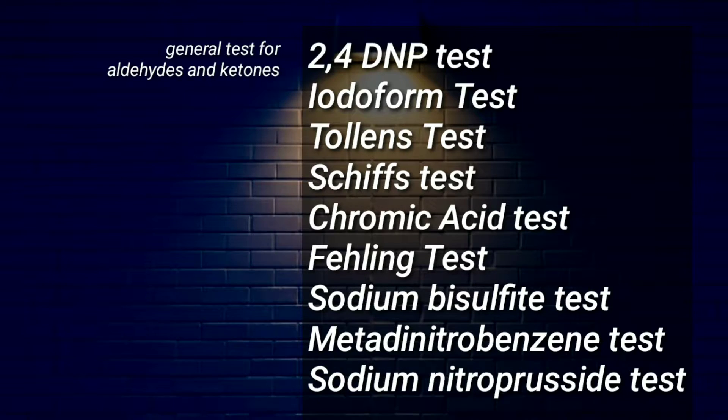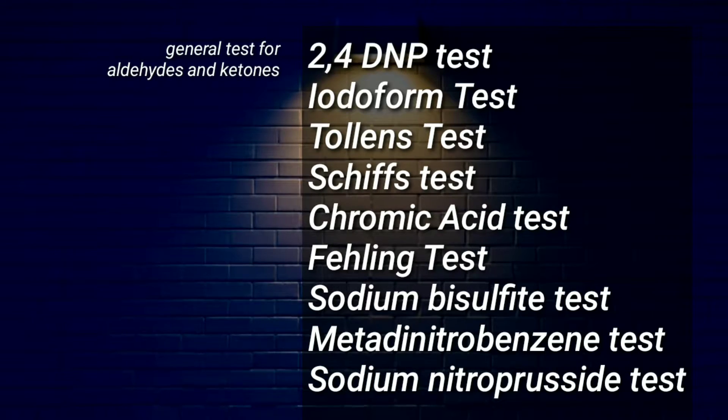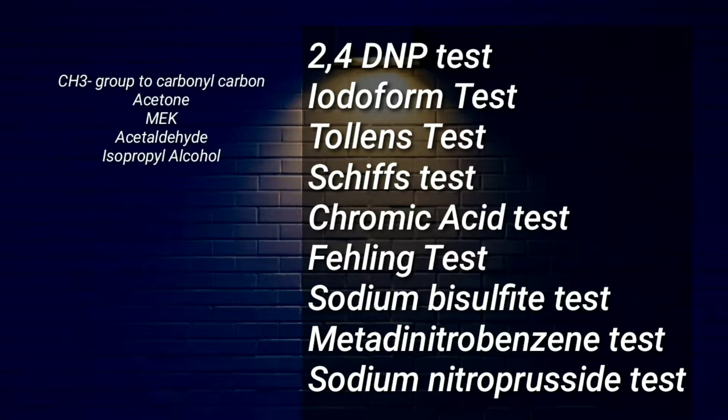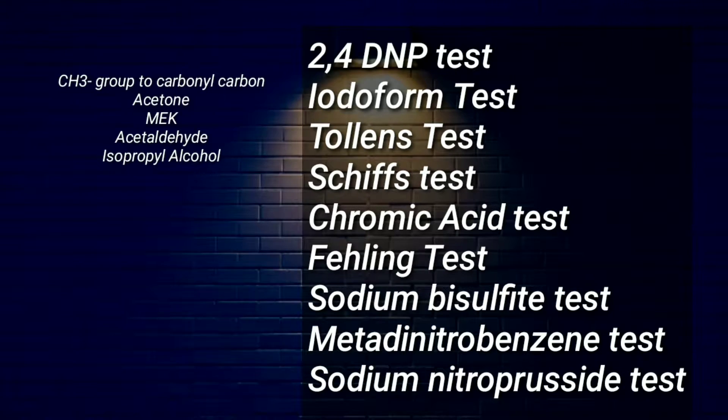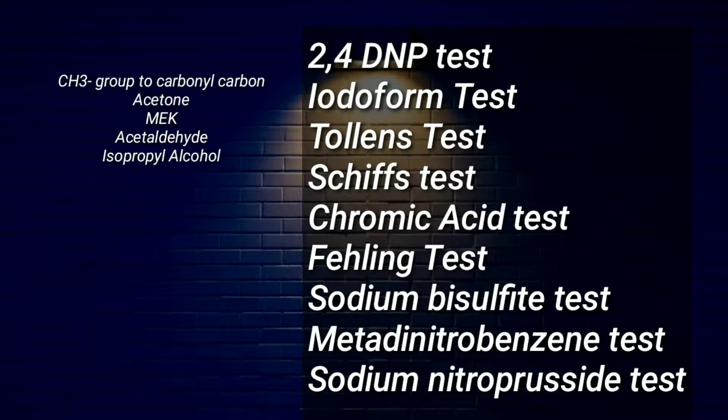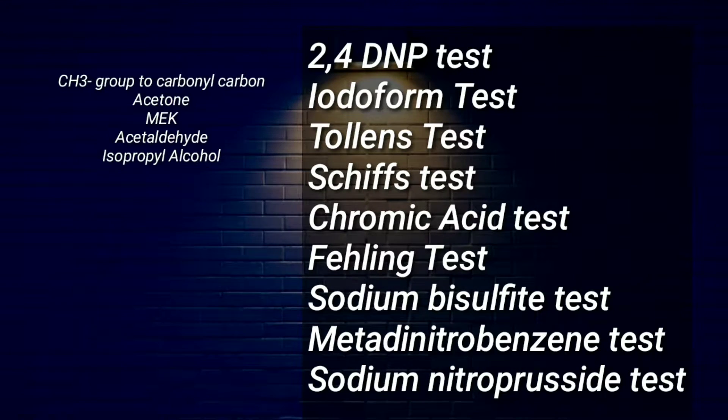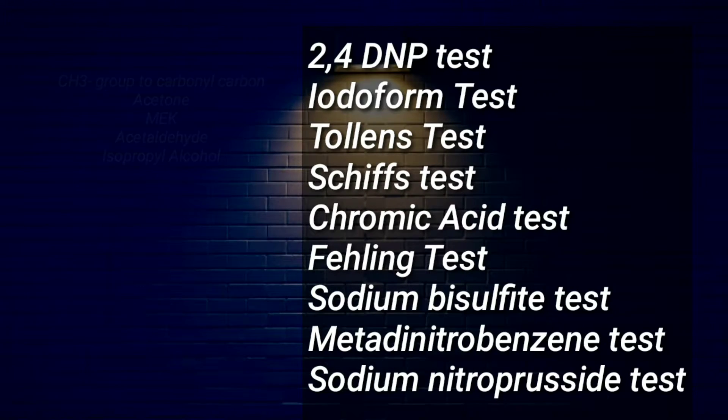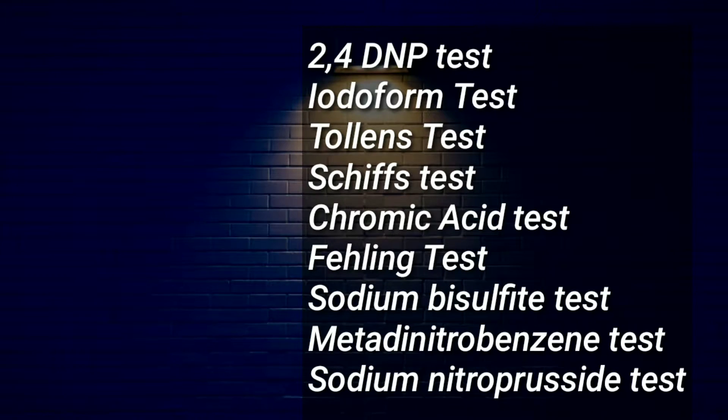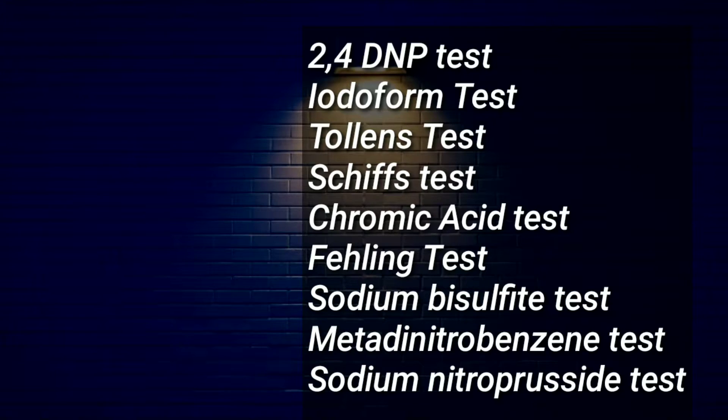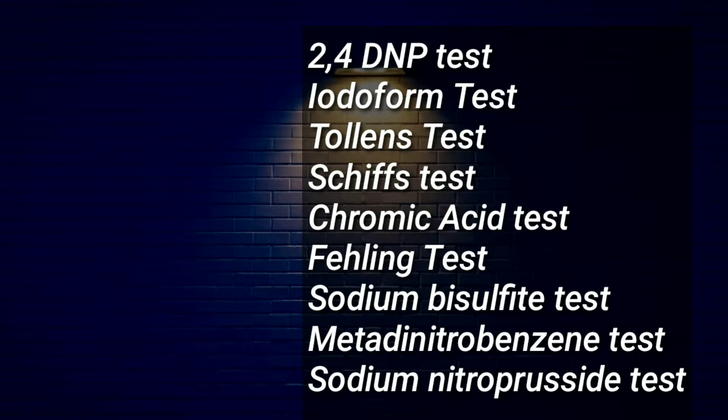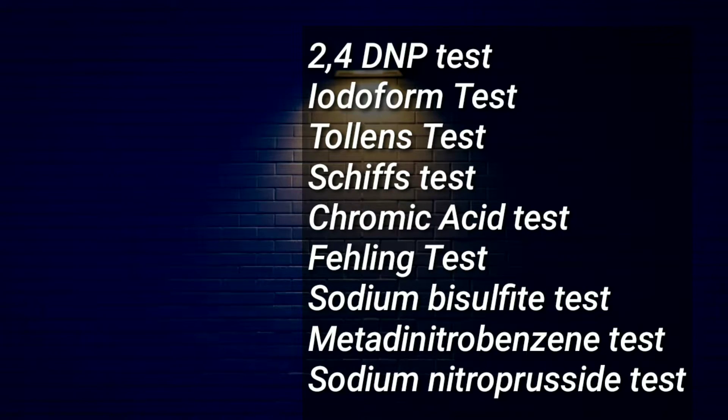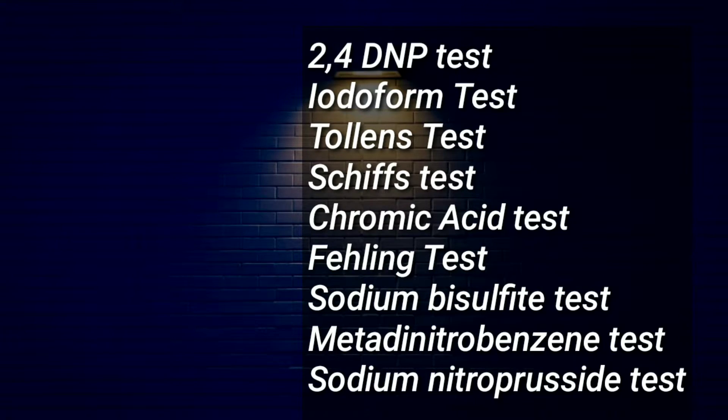The various tests for aldehydes and ketones are: the 2,4-dinitrophenylhydrazine test, which is a general test for aldehydes and ketones. Iodoform test is not specific to aldehydes and ketones, but most ketones with a CH3 group attached to the carbonyl carbon like acetone and methyl ethyl ketone give positive results. Acetaldehyde is the only aldehyde giving positive iodoform test. Secondary alcohols also give positive results. Specific tests for aldehydes are the Tollens test, Schiff test, chromic acid test, and the Fehling test. The tests for ketones are the sodium bisulphite test, meta-dinitrobenzene test, and sodium nitroprusside test.